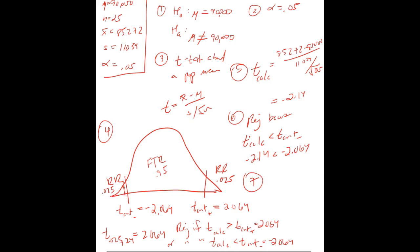Note something: had we chosen a different alpha level — had we chosen 0.01 — that would have given us a different, wider t critical value and made the burden of proof tougher. Our t-calc value would have actually fallen within the fail-to-reject region. So we have significant evidence at the 5% significance level, but we don't have significant evidence at the 1% significance level.